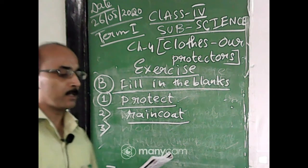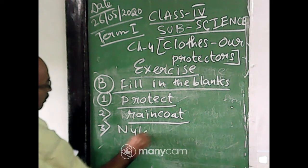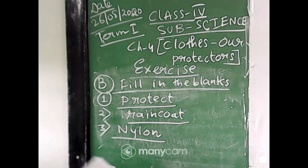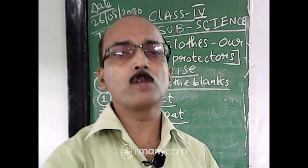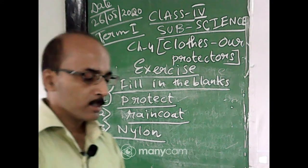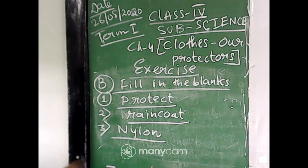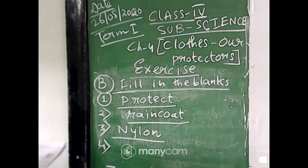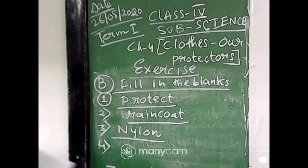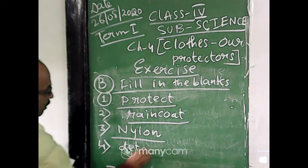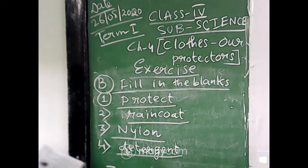Number three: ___ is a synthetic fiber. The answer is nylon. If options are not given, you can write nylon, rayon, or polyester — these are all synthetic fibers. Number four: for proper care of clothes, we should always use a good quality detergent.